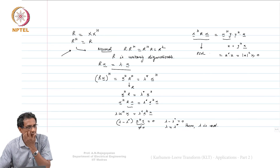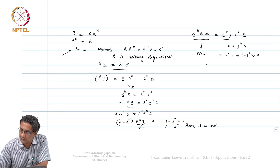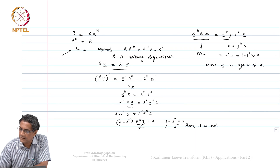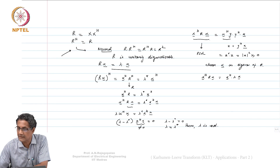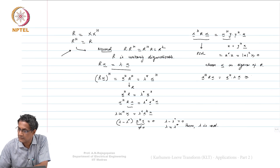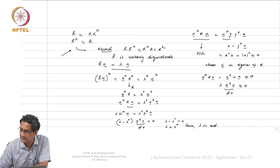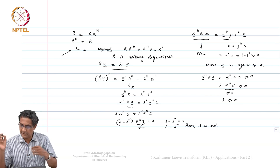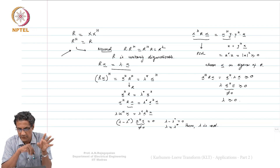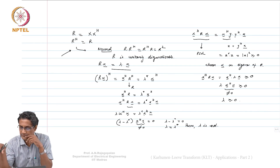Everything done for real matrices goes through in a straightforward manner for complex matrices. If you choose X to be an eigenvector of R, then X Hermitian R X equals lambda times X Hermitian X. Since in general X Hermitian R X is greater than or equal to 0, and X Hermitian X cannot be 0, lambda must be greater than or equal to 0. This is why the eigenvalues are real and non-negative, and R is unitarily diagonalizable.